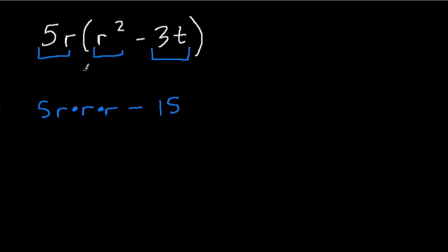Minus 5r times 3t. Well, 5 times 3 is 15, and r times t is rt. What's this right here? r times r times r is just r to the third power. So we can write this as 5 times r to the third power minus 15rt.